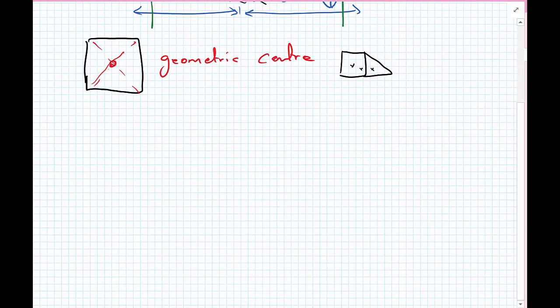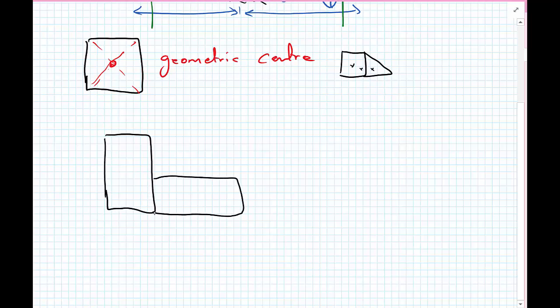We can also imagine we have a composite body now. We could work out the individual centroid and from those individual centroids go on to calculate where our composite centroid of the section is.